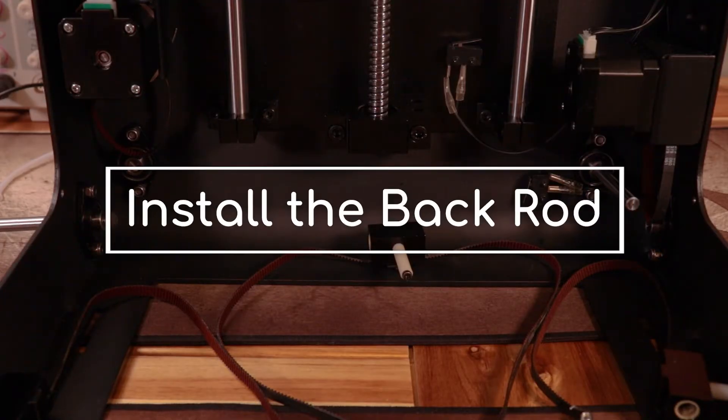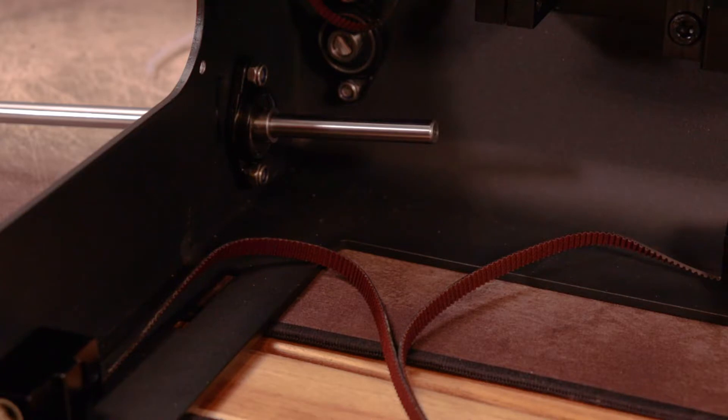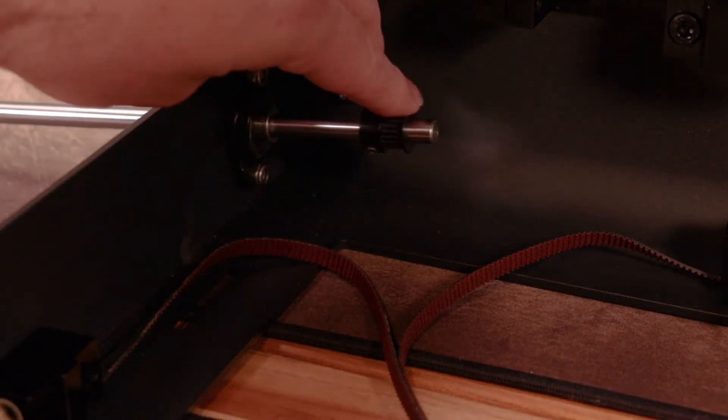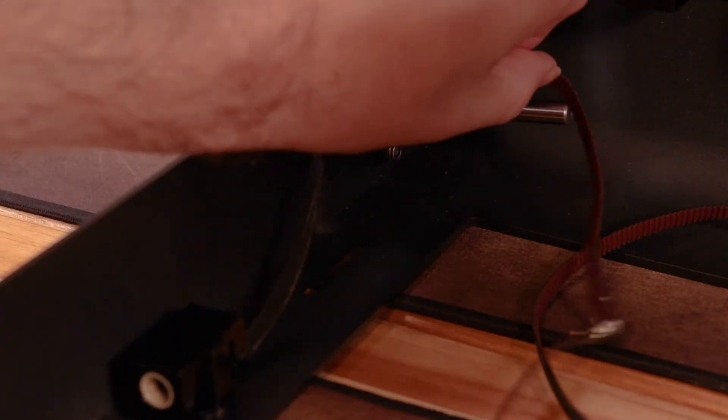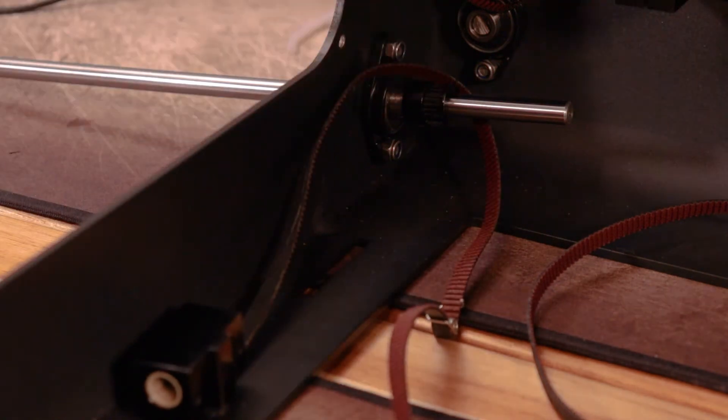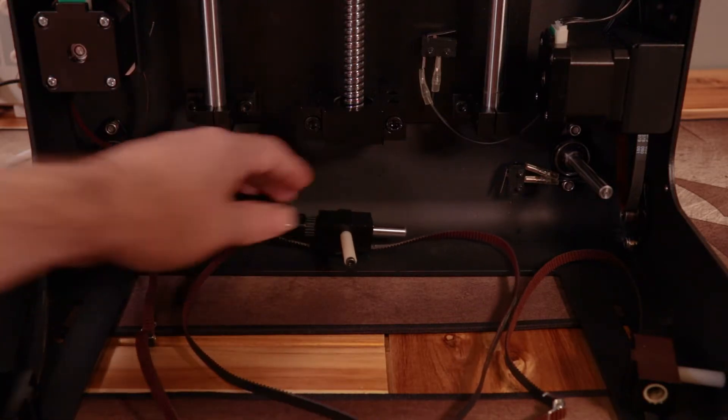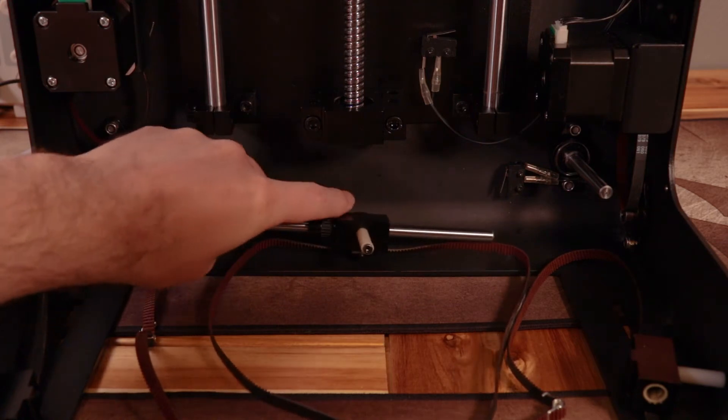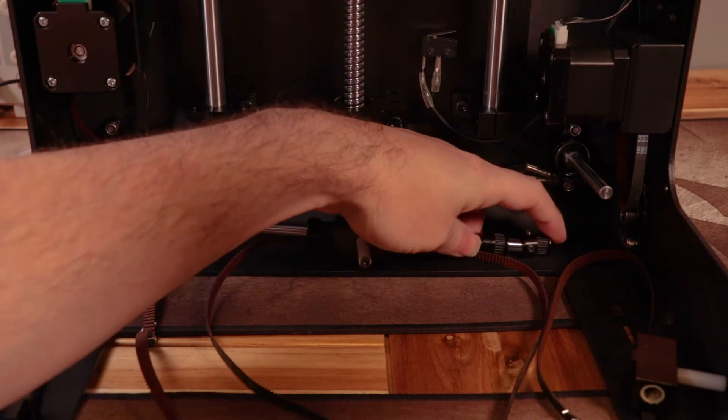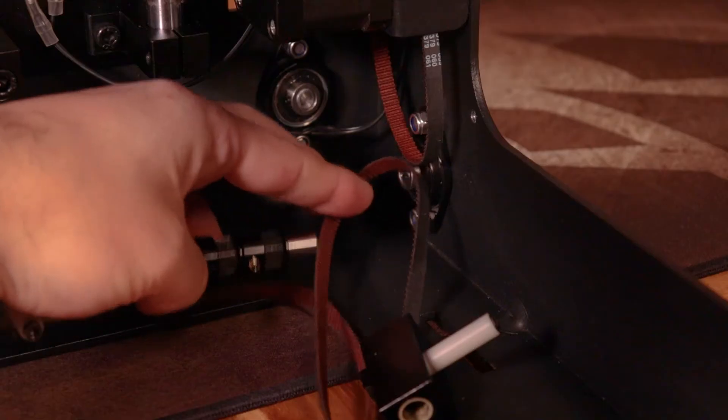Now let's install the rods. Start with the back one. Push it through the drilled hole and push it slightly into the case. Then add the first pulley with the teeth on the right side. Now loop the left belt around the rod. Make sure the teeth on the belt are facing toward the rod and that the belt hasn't become twisted. Push the rod further into the case and install the back slide. The slide will rotate around because the belt is weighing it down. This is fine and we'll rotate it back later. Install the remaining two pulleys.